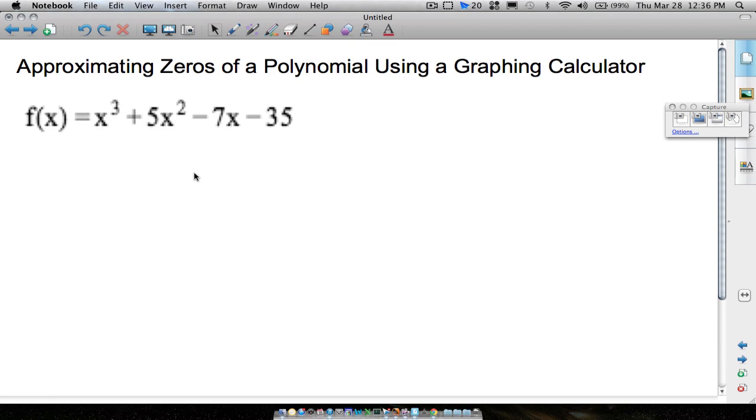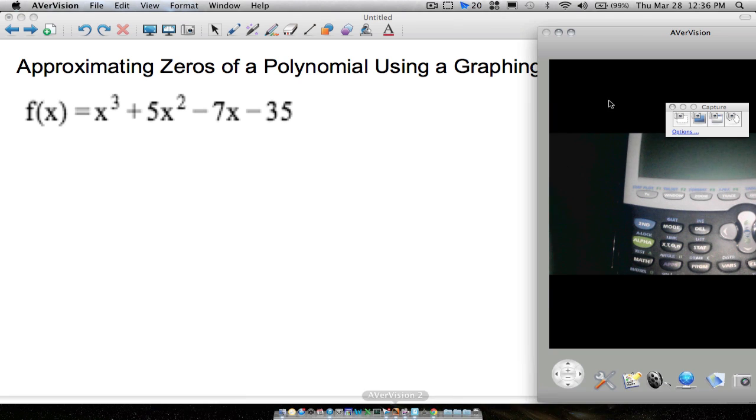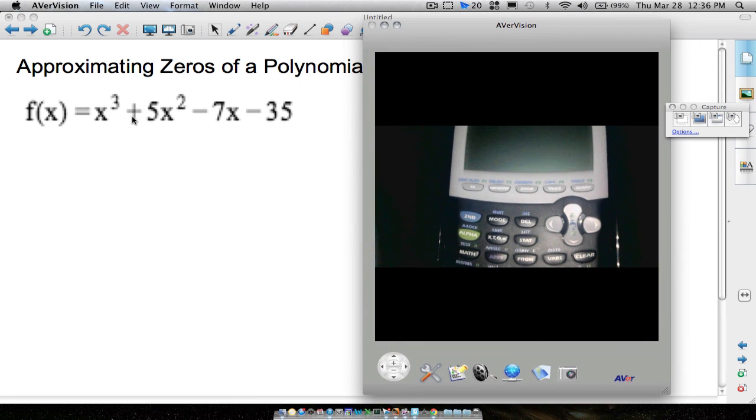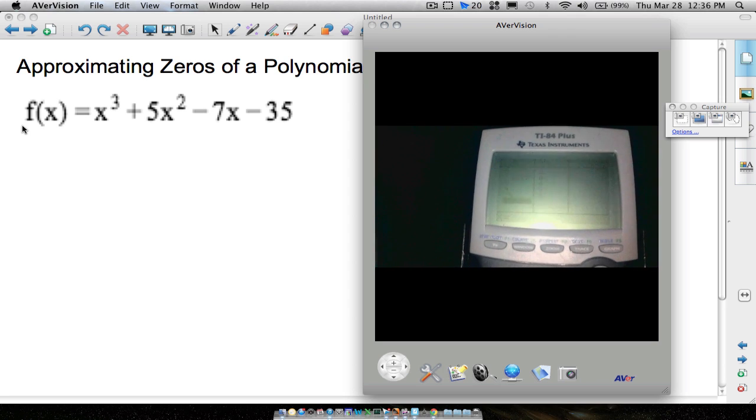Right, in this video we're going to look at an example of how to approximate zeros of a polynomial using a graphing calculator. And the example we're going to work out is this one here. We want to approximate the zeros. What values of x will make this function equal to zero? And that's what I'm going to show you how to do here.